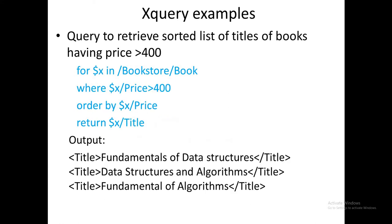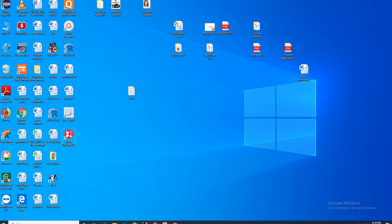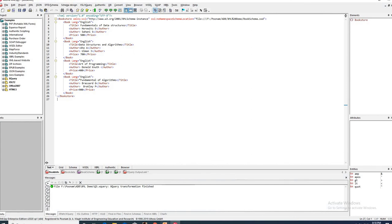The third query retrieves a sorted list of titles of books having price greater than 400. This demonstrates the Order By clause. Book elements are retrieved and iterated over, the condition is added that price should be greater than 400, and the output is ordered according to price. The Return clause displays $x/title, so only titles of the qualifying elements are shown, ordered by ascending price.